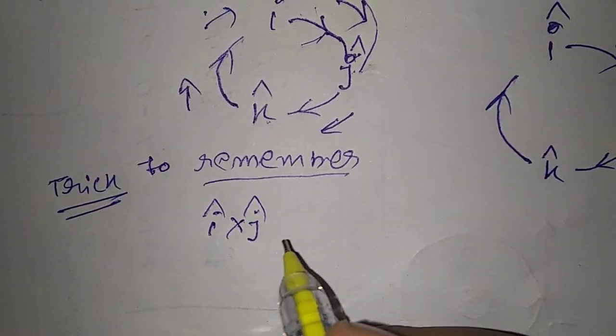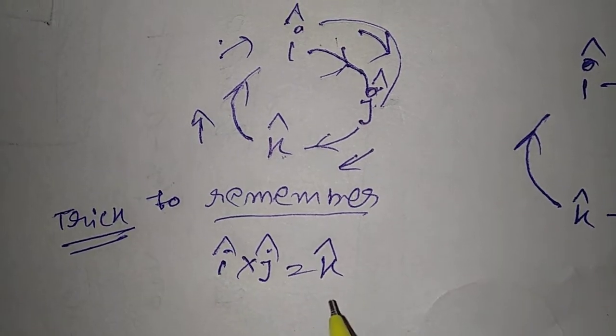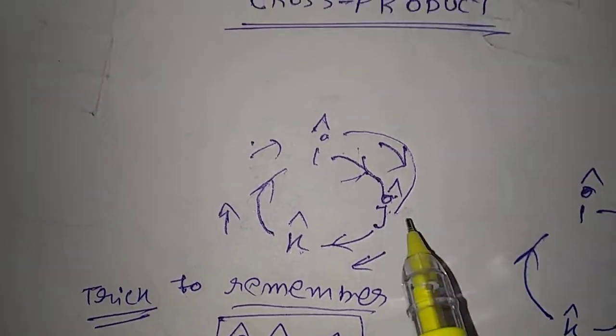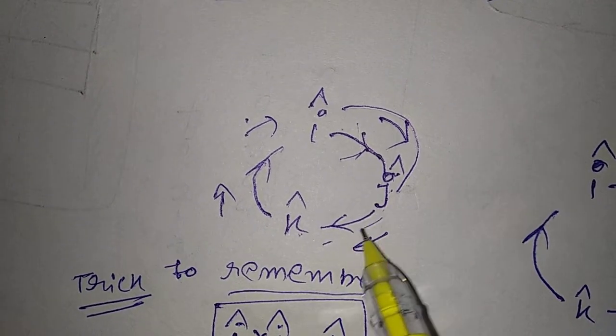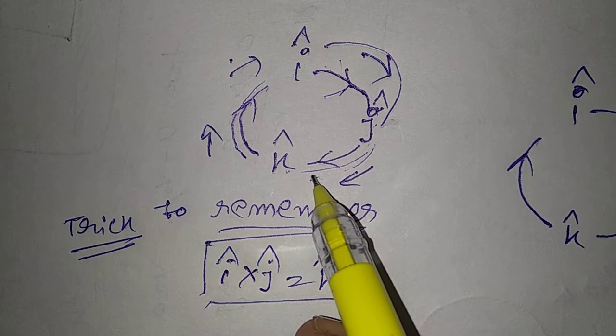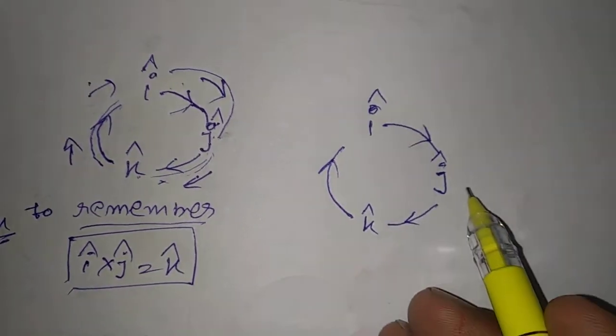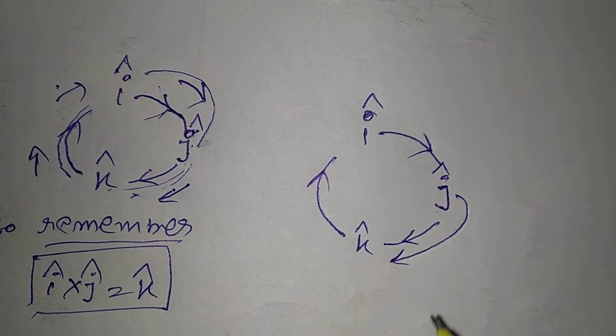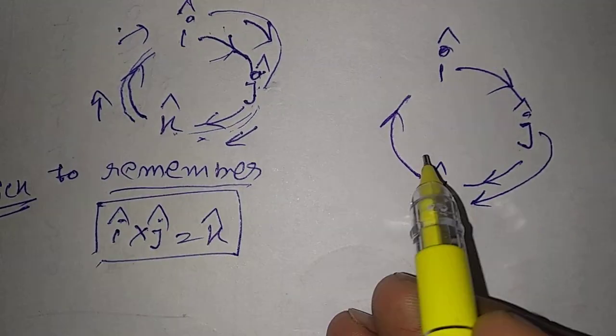K. So I cross J equals K. Now J goes to K, then K returns to I. So first, J goes to K - or I can show here, J goes to K - and K goes to where? I. So J cross K...